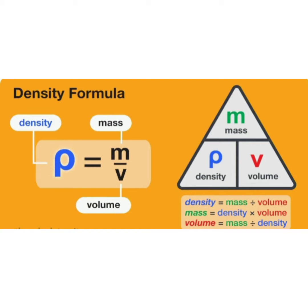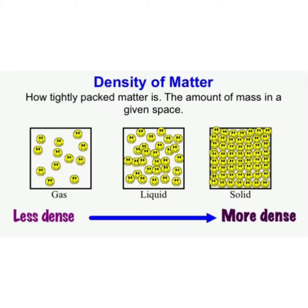Density is a measure of how much mass of a material fits into a given volume. We say density is the ratio of mass to volume — density is equal to m by v. If we have two materials with the same volume, the material with a higher mass will be more dense, and will have a higher density.